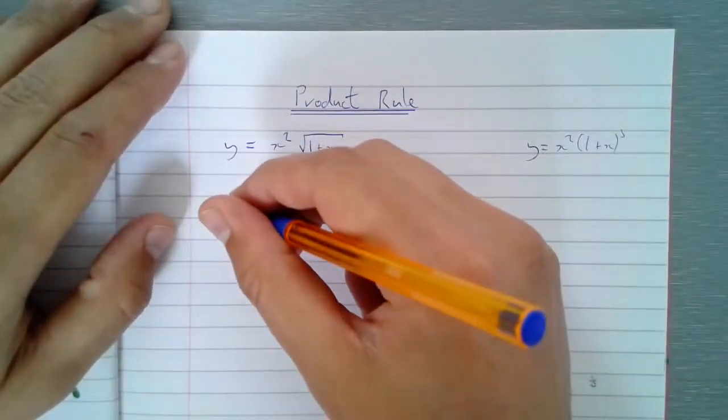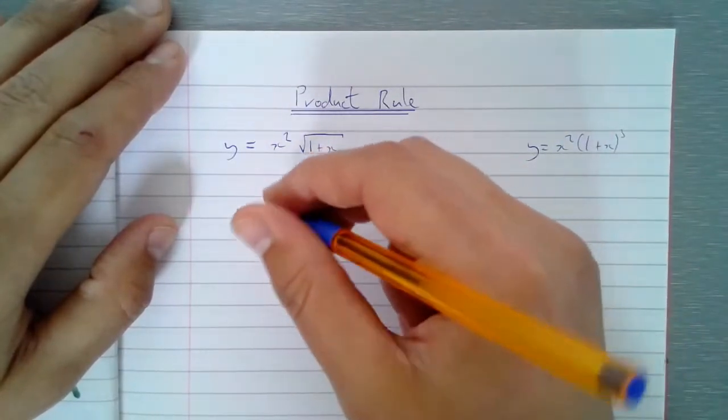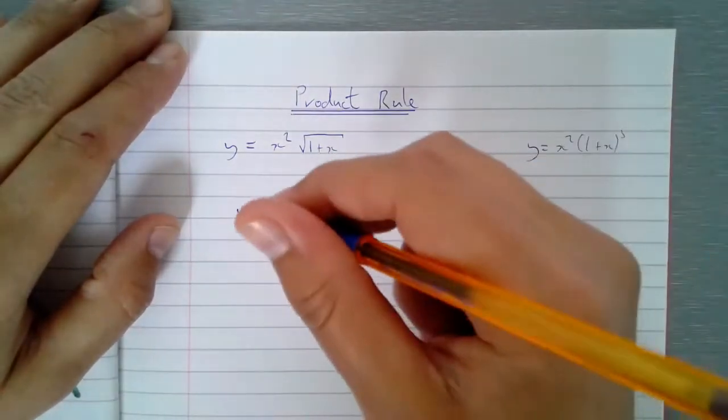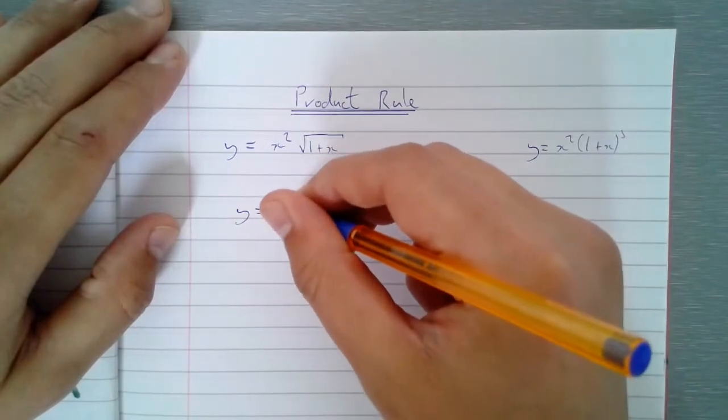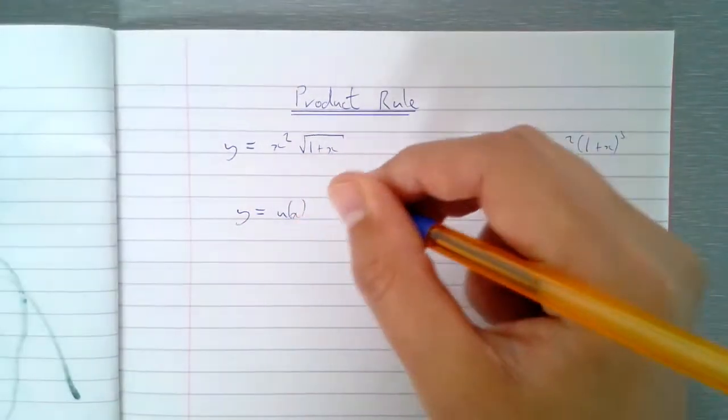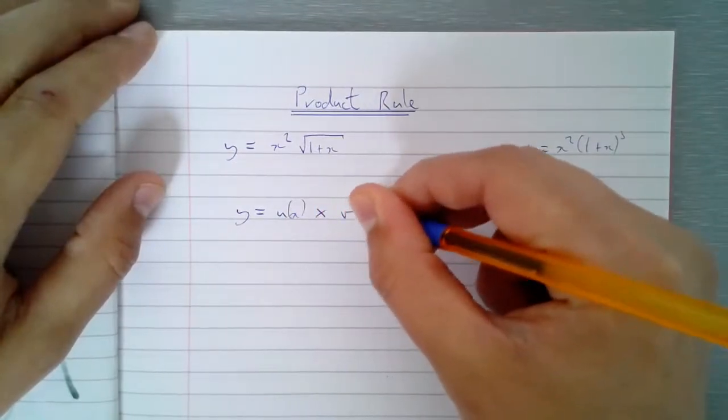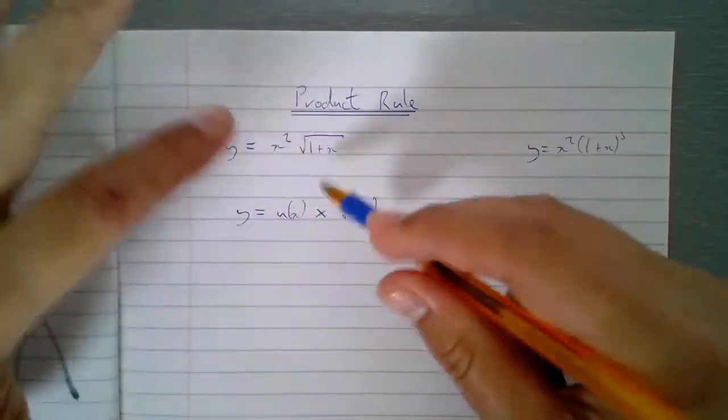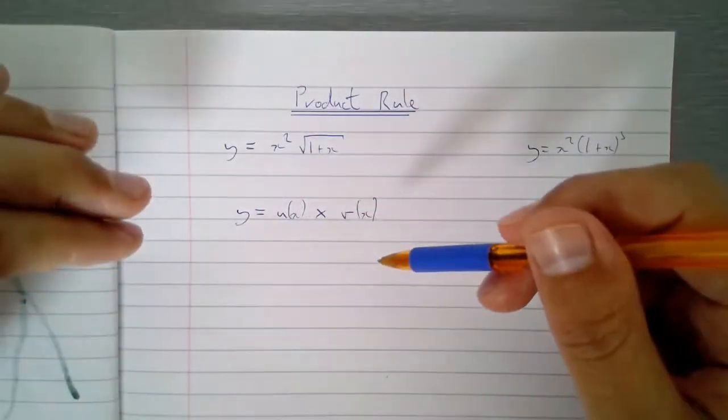Similar to yesterday, we've got a formula to write down. So if I've got y is equal to two functions that are multiplied together, so let's say some function u of x times some function v of x. Doesn't have to be in x, I could have different variables, but for the purpose of what we're doing here, let's assume the functions of x.